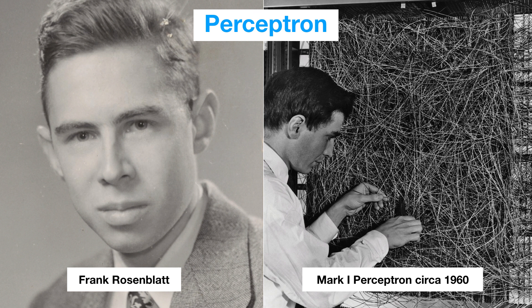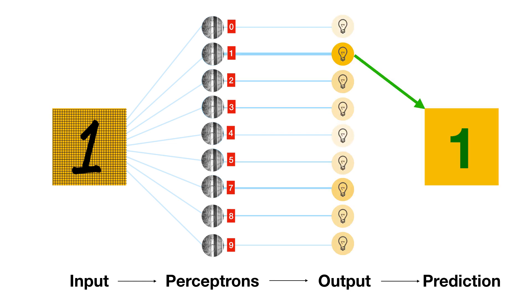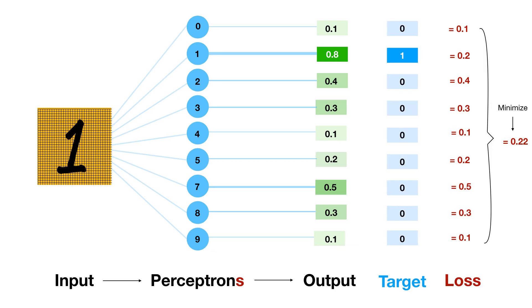Remember Rosenblatt, the perceptron inventor from the last video — this is actually the same as what he did. He would set up multiple light bulbs corresponding to each class, and whichever light bulb lit up the brightest was considered to be the class of the image. In our case, we're going to have 10 perceptrons corresponding to each digit, and we'd like our classifier to output a 1 — or a number close to 1 — for the digit actually written in the image, and a 0 for all the other digits.